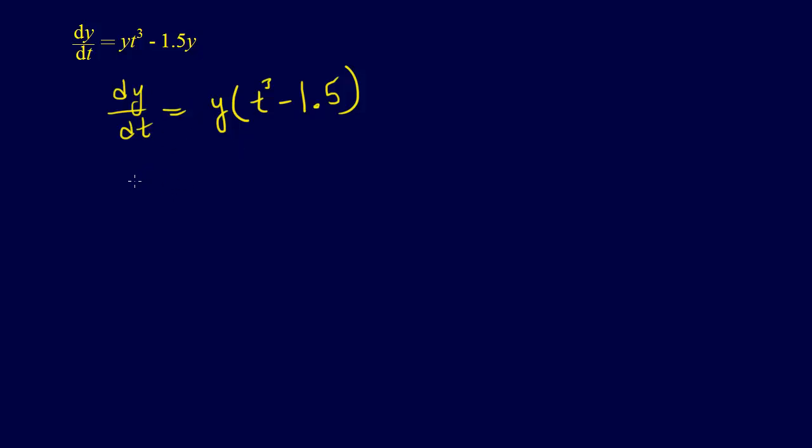So now we can separate this and integrate, so we'll have the integral from y initial to y of 1 over y dy equals, because we just divided both sides by y, is equal to the integral from 0, because this time starts at 0, to t of t cubed minus 1.5 dt.